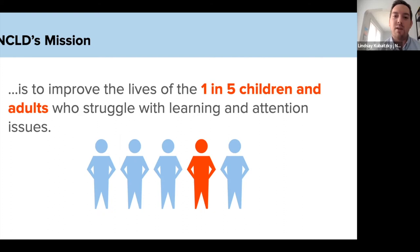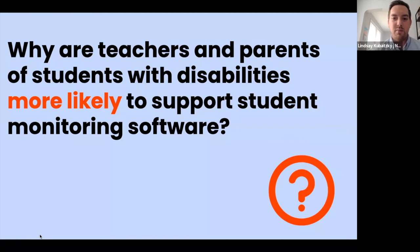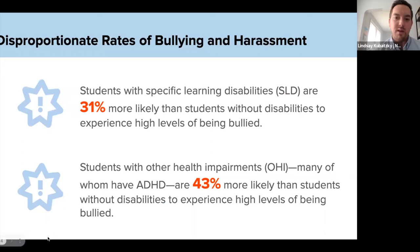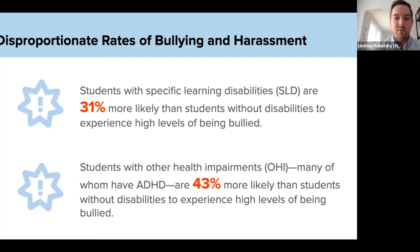Roughly another 15% of students receiving special education are identified under the other health impairment category, which is where a lot of students who have ADHD are typically classified. As for why parents and educators of students with disabilities might be more likely to support student monitoring software: there is disproportionate discipline, harassment, and bullying for students with disabilities. Students identified as having SLD are 31% more likely than those without disabilities to experience high levels of being bullied. Parents are acutely aware that their students are at risk of being harassed or bullied in school.